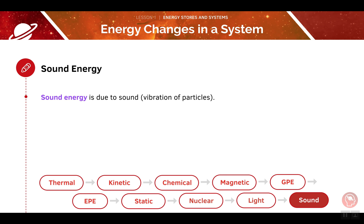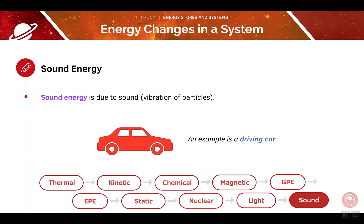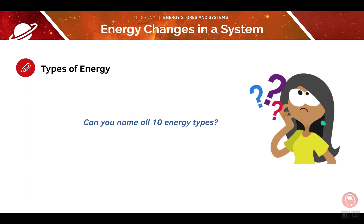Our final form of energy is sound energy — as the name suggests, it is due to sound, or the vibration of particles. Previously, we used a car as an example for kinetic energy; however, a car will also have some energy output in the form of sound. Now that we've covered all 10 energy types you should know, pause the video now and try to write out the names of all of them. The answers will be on the next slide.